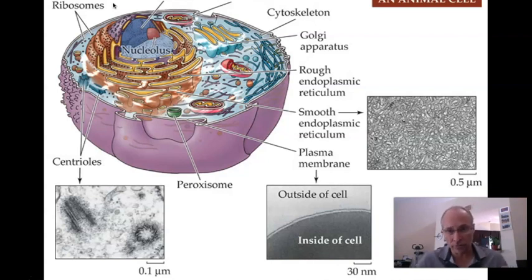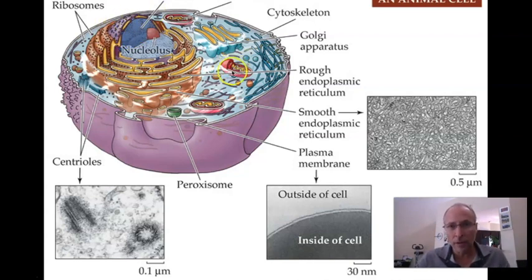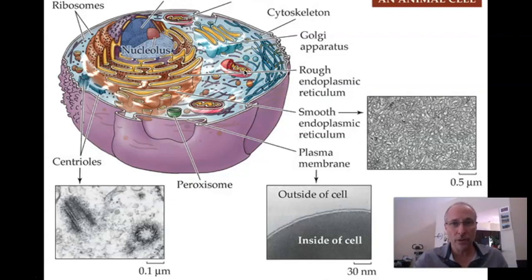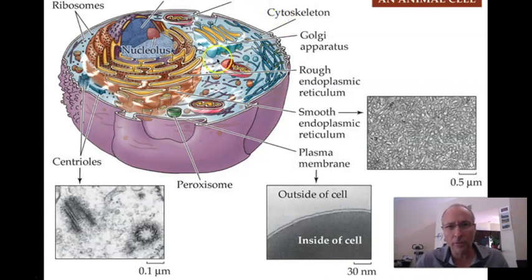I usually ask this in class and invite people to say what they think. Almost everybody says the mitochondrion, which is a good guess — it's associated with energy. But it's associated with energy production, not energy use. It doesn't actually produce energy; it transforms it from one form to another that's metabolically useful. So the mitochondrion is exactly the opposite answer: it's producing metabolic energy, not using it. The question is, what's using it?